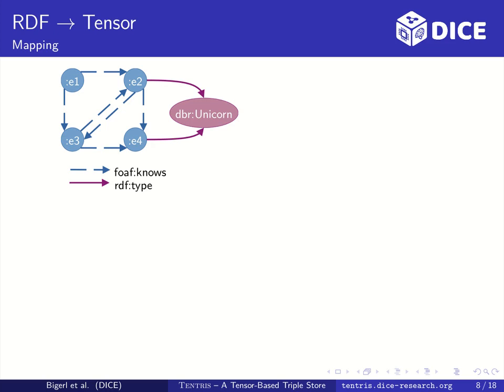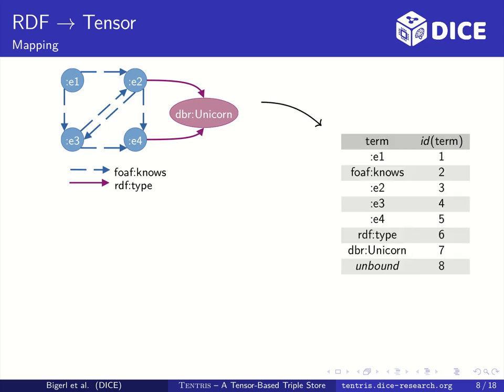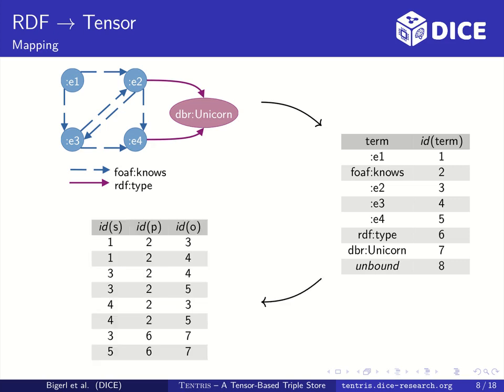Here we have a simple example of an RDF graph. It models entities and who they know. Also some of them are unicorns. Like most other triple store solutions, we encode all RDF terms with integer IDs. One ID is reserved for unbound terms like they are used in SPARQL results.